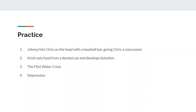The first example: Johnny hits Chris on the head with a baseball bat, giving Chris a concussion. If you remember from our last episode, a disease is anything where you depart from a normal state of well-being. Chris has a concussion, which by our definition falls under disease. So there is an agent — the baseball bat is causing the concussion. The baseball bat is your agent, and it falls under a physical agent.